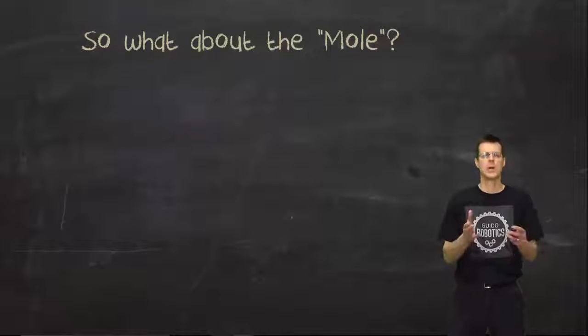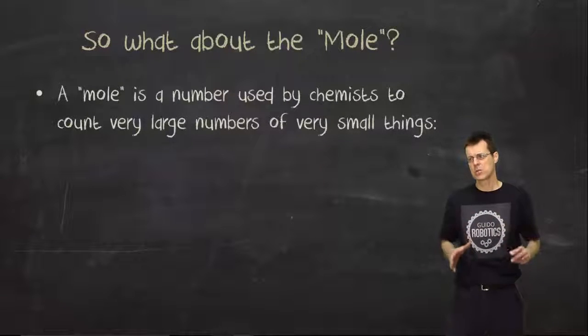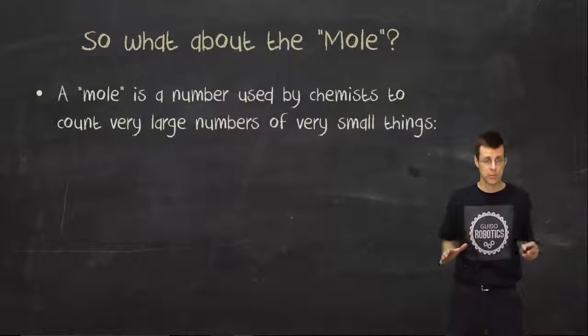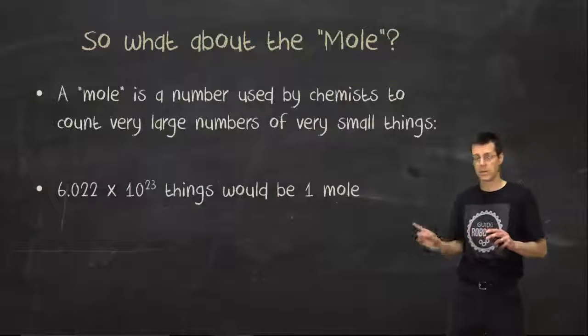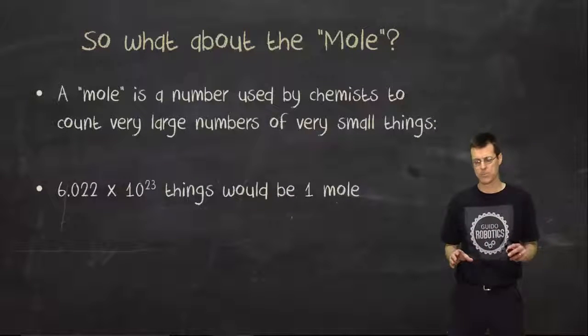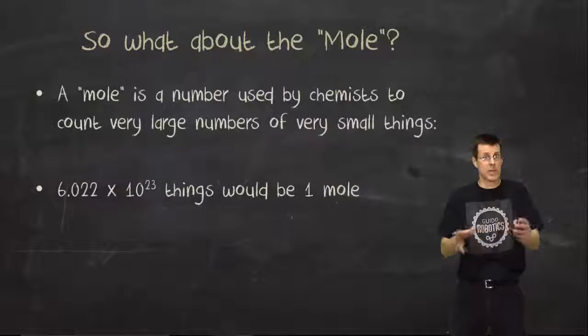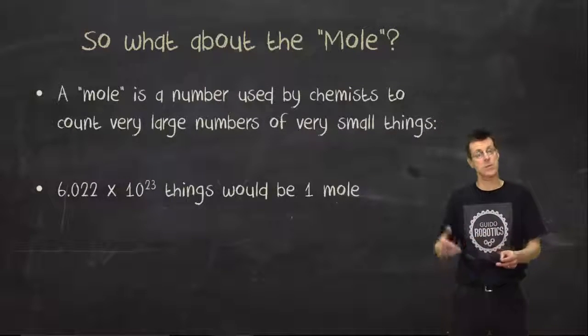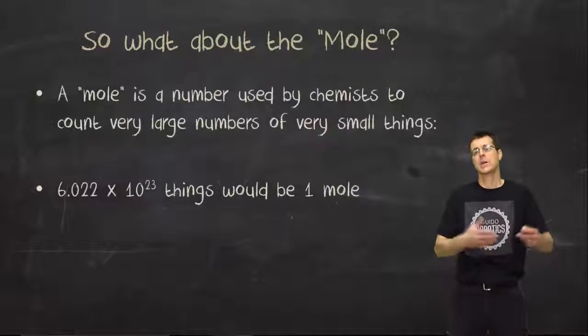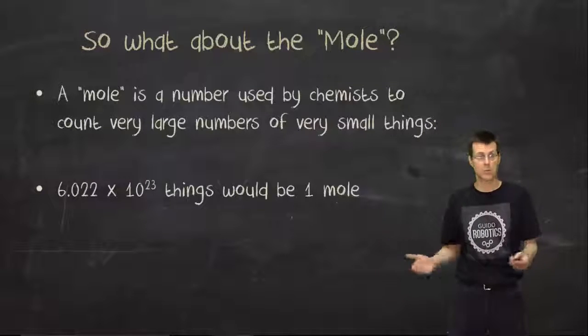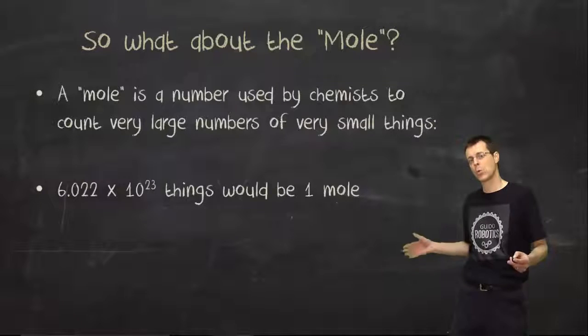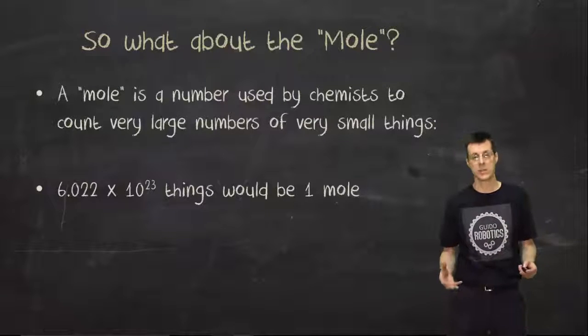The mole for us is going to be a very similar idea. We use the mole as a counting tool for very, very large numbers. It only works for very, very small things like atoms and molecules, which is probably why you've never heard of it before. The actual number is 6.022 times 10 to the 23. And if you have that many things, you have a mole. If you have that many atoms, it would be a mole of atoms. If you had that many molecules, it would be a mole of molecules.